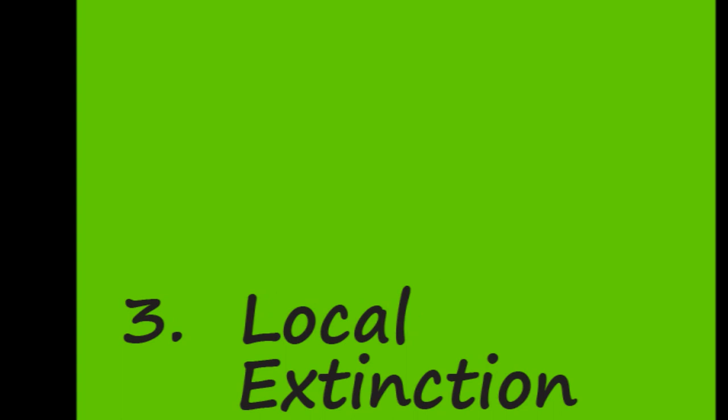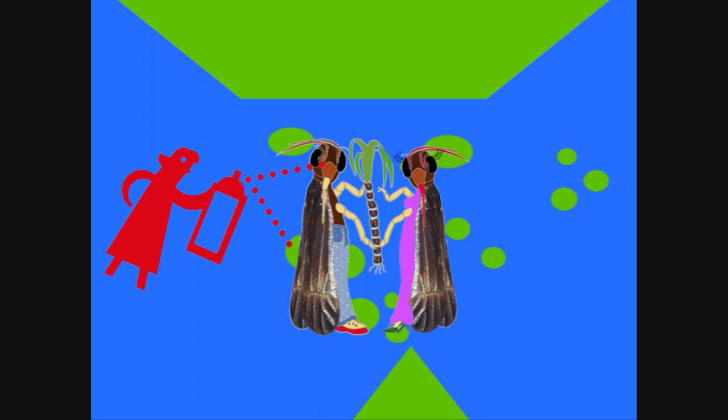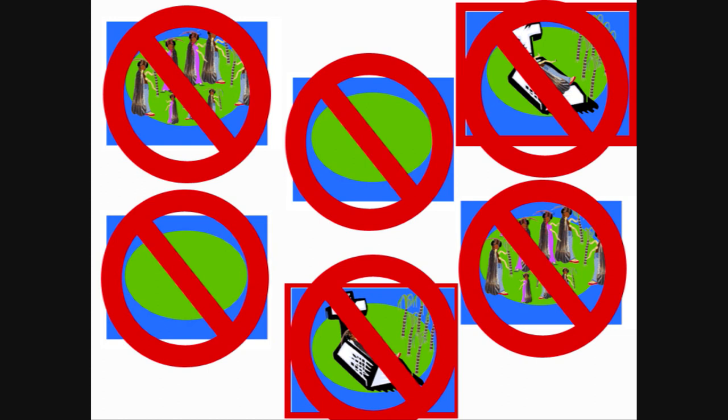Migration, colonisation and local extinction are the three essential Metapopulation Theory processes and are the key to controlling the plant hopper in the Torres Strait. Identifying and removing the big populations means removing the migration. Without migration, there is no colonisation, and small populations relying on migration for survival will go extinct. Therefore, total Metapopulation extinction can be achieved, creating a plant hopper-free buffer zone in the Torres Strait.